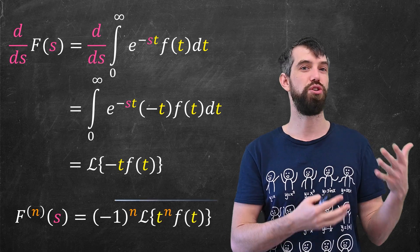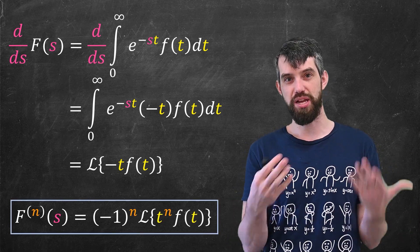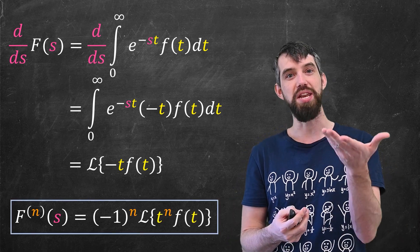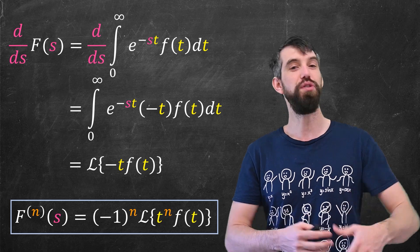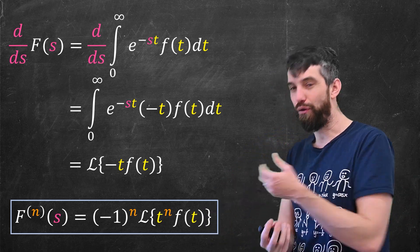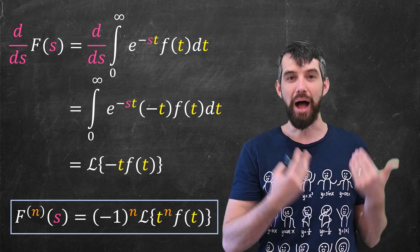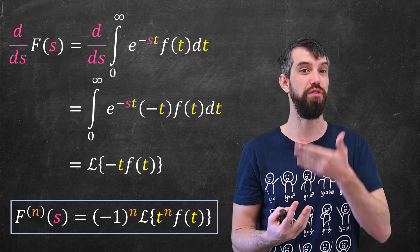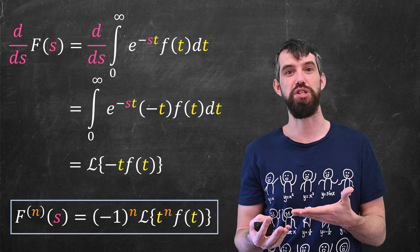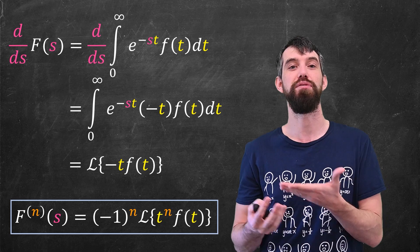If I take this derivative n times, every time you take a derivative you multiply out by another factor of minus t. So if you take n derivatives you get the general formula: it is (−1)^n times the Laplace transform of t^n times f(t).